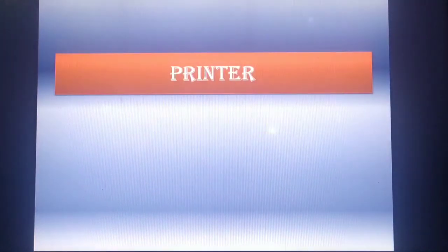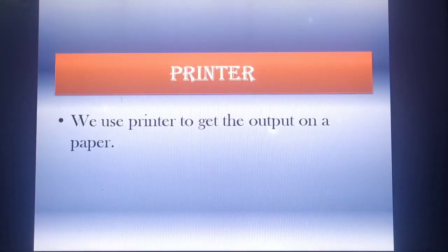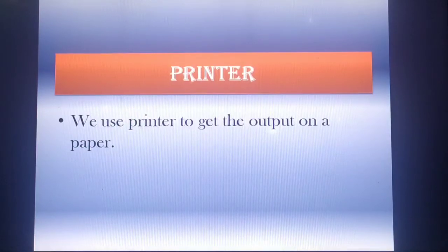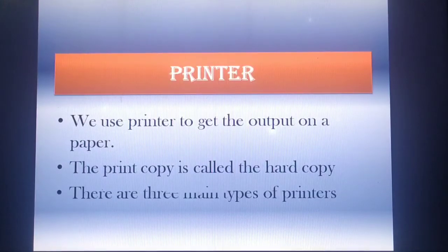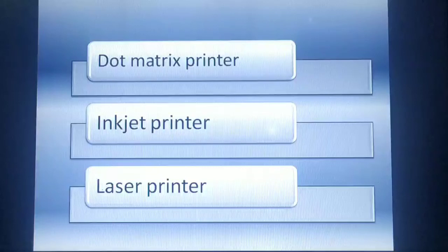The second output device is the printer. We use a printer to get the output in the form of text and pictures on paper. The printed copy is called hard copy. There are mainly three types of printers: dot matrix printer, inkjet printer, and laser printer.